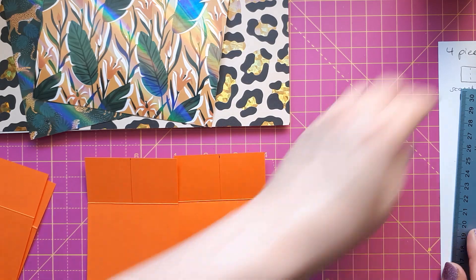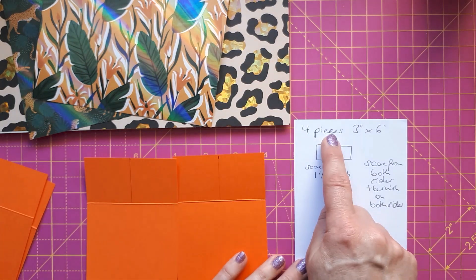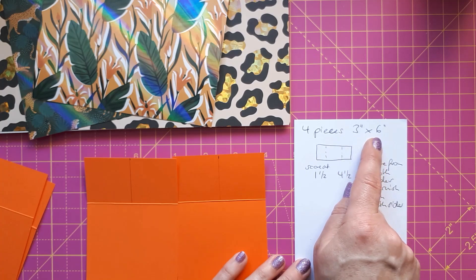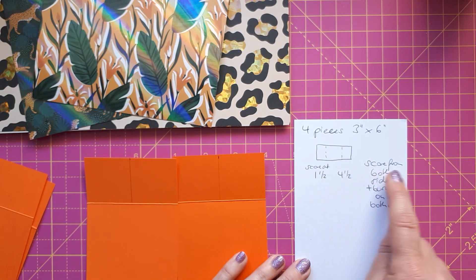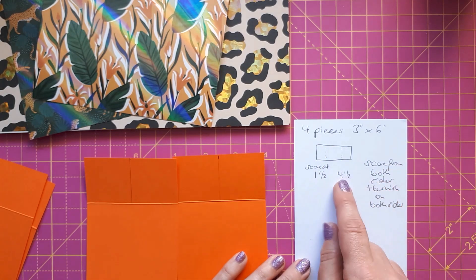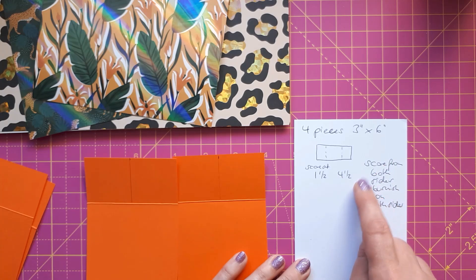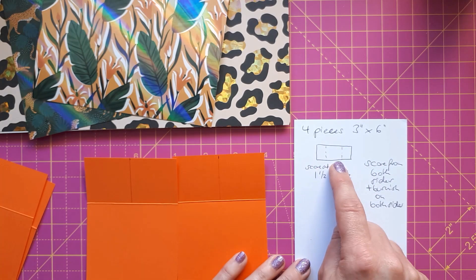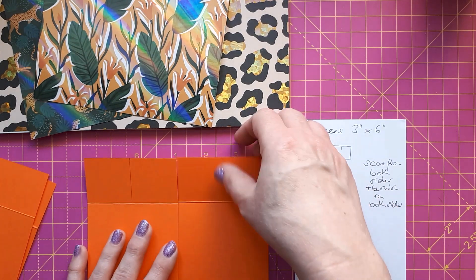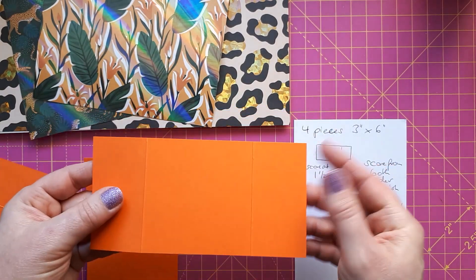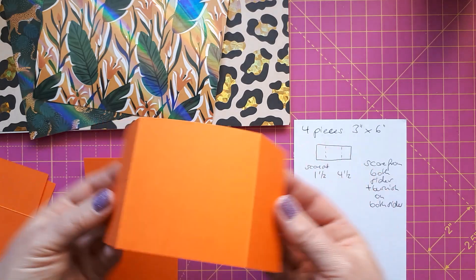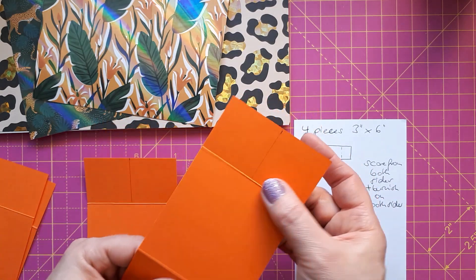So for this card, what you need is four pieces that are three inches by six inches, and you need to score these all at one and a half and four and a half on the long piece here. Then you need to turn the piece round and score it again from the other side because all the pieces need to be scored and burnished on both sides so that's what I've already done here. I've scored them at one and a half and four and a half, turned it round, did the same again, and then burnished these so these are really flexible because that's what you need for the mechanism.